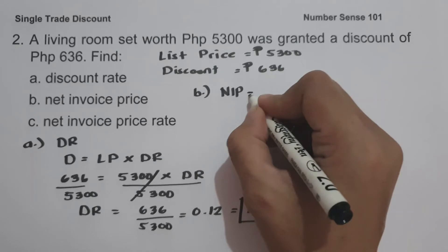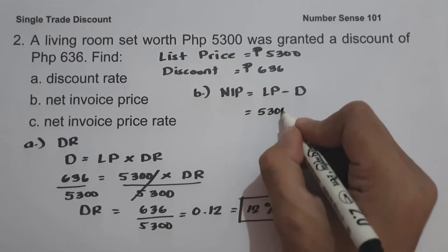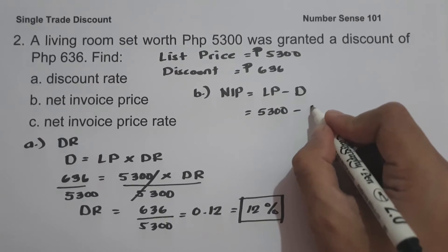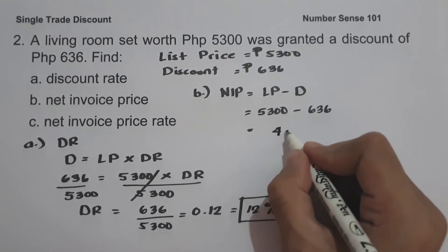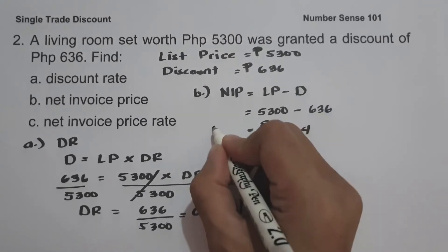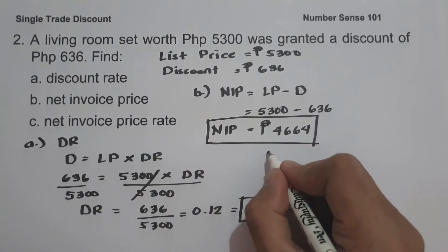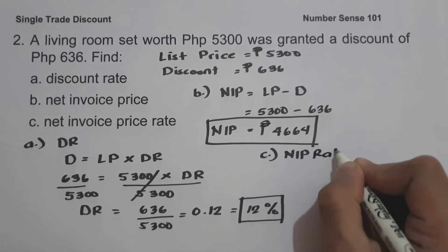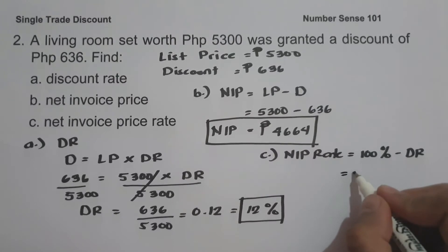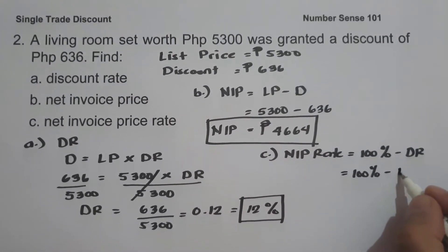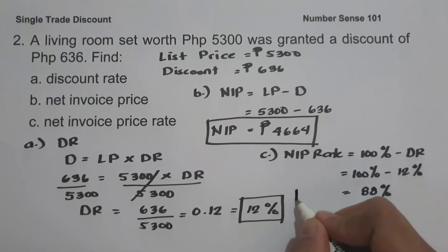On letter B, we are looking for the net invoice price: NIP equals list price minus the discount. Five thousand three hundred minus six hundred thirty-six equals four thousand six hundred sixty-four pesos. This is our NIP. For letter C, the NIP rate equals one hundred percent minus the discount rate: one hundred percent minus twelve percent equals eighty-eight percent. This is our NIP rate.